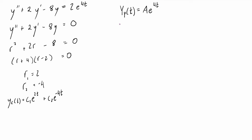Now we want to differentiate y_p(t) once: y_p'(t) = 4Ae^(4t). Then we differentiate again: y_p''(t) = 16Ae^(4t).